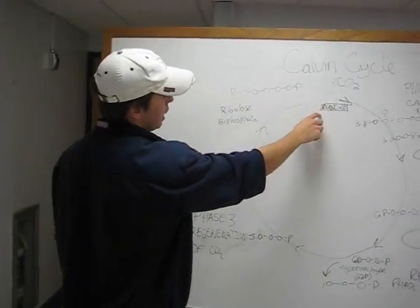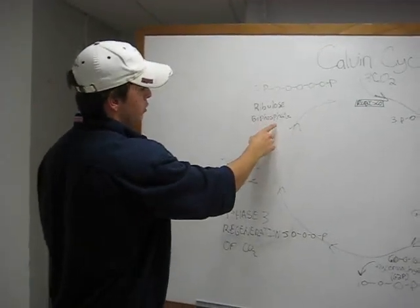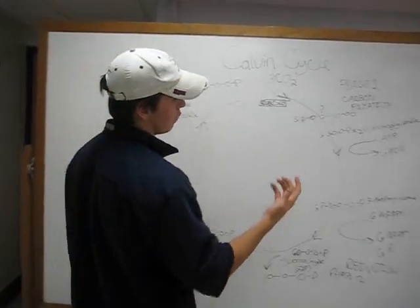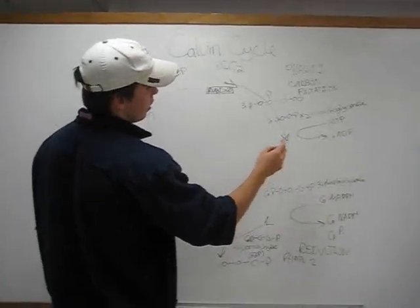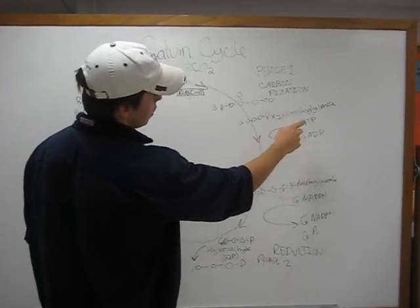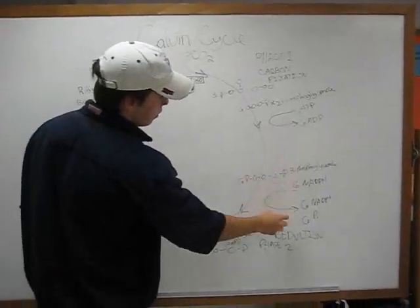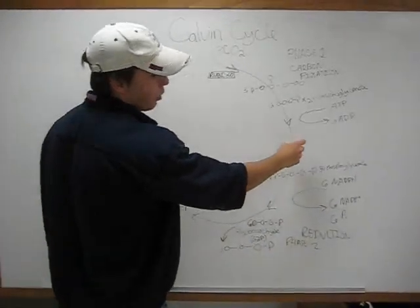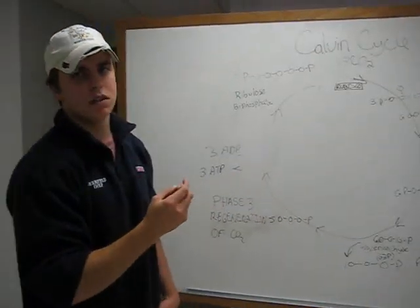The enzyme rubisco catalyzes the combination of CO2 and ribulose bisphosphate. That stage is called carbon fixation and is the first phase of this process. From there, two phosphoglycerate are produced. By using six ATP, we produce six bisphosphoglycerate. These six ATP are products of the light reactions of photosynthesis.